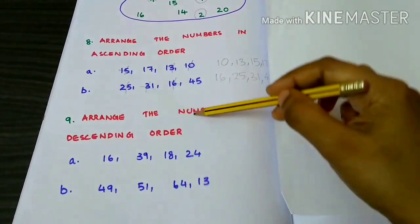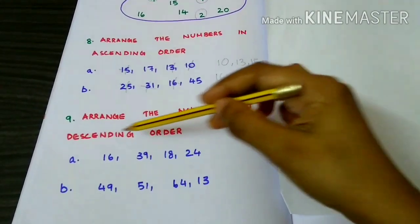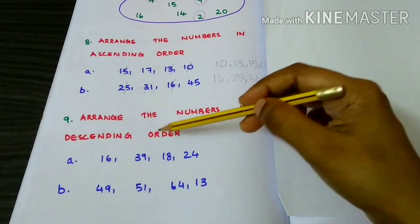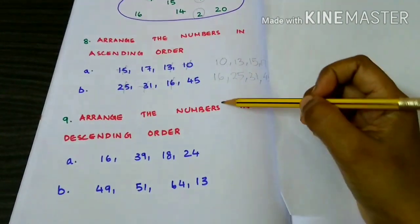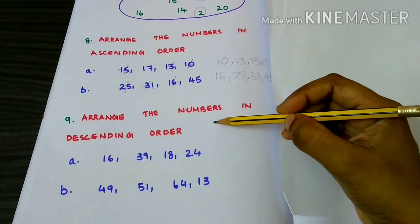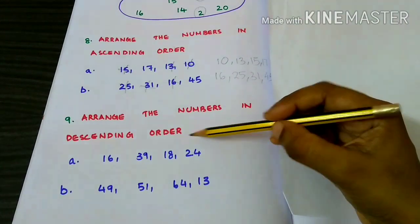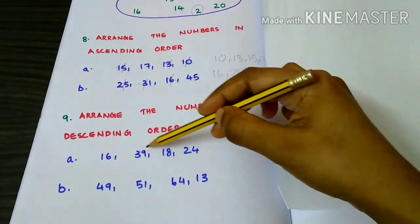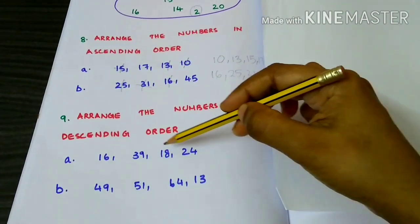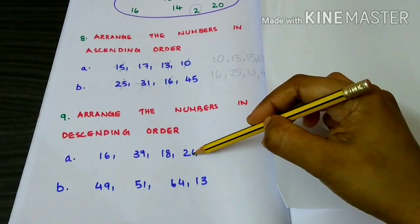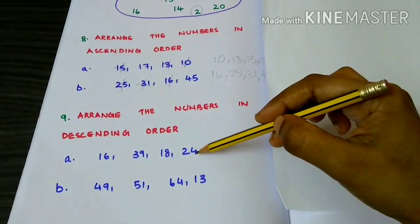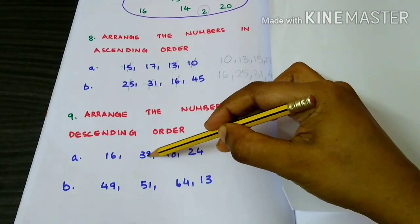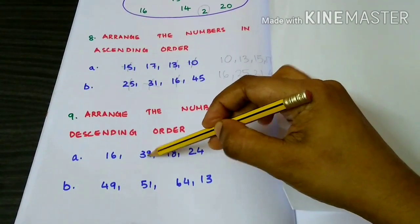Arrange the numbers in descending order. Descending order means from the biggest number to the smallest number. Numbers: 16, 39, 18, 24. If you arrange in descending order, the biggest number should come first — that is 39.